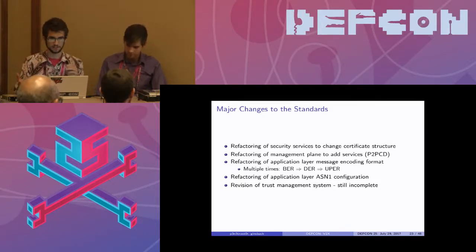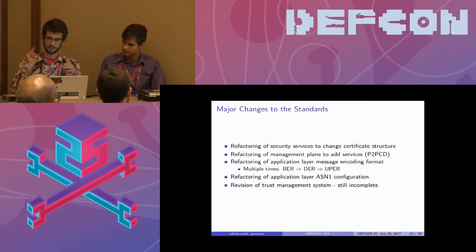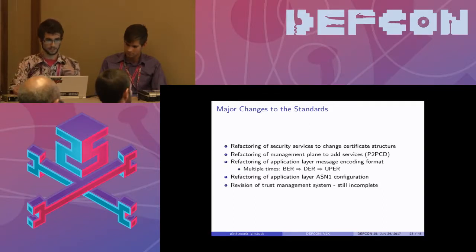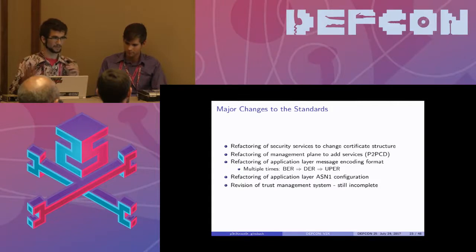So you have ASN.1 specifications that are entirely incompatible, and in fact the most recent one that was published doesn't actually compile, and also uses type systems that are non-standard in ASN.1 processing utilities. I even went so far as to buy the spec — which I try to never do — and what do you know? It doesn't actually compile and you can't actually use it or parse it.